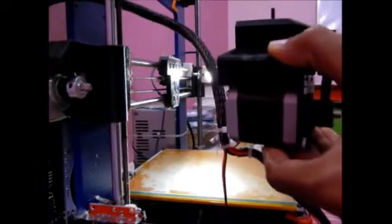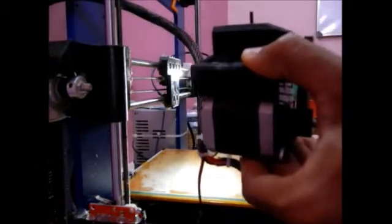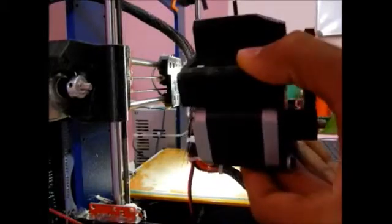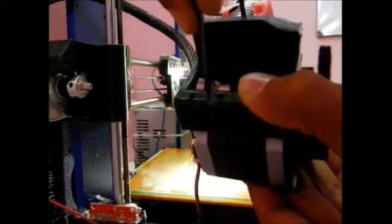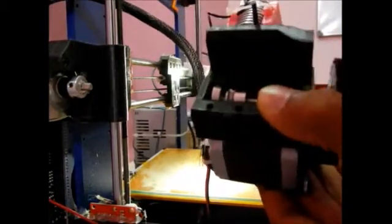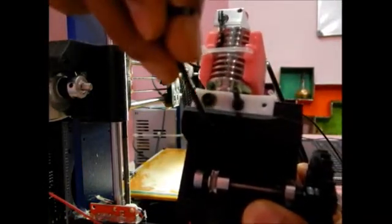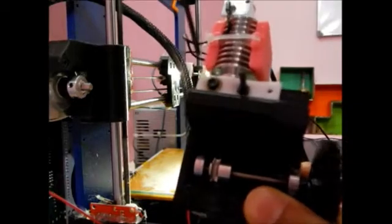Switch on the lights in the room you are working and look into the hole above the extruder body from where the filament goes in. Align the hotend until you see the light through the nozzle hole. Now tighten the hotend fully using hex key.